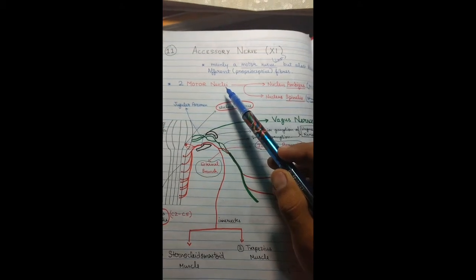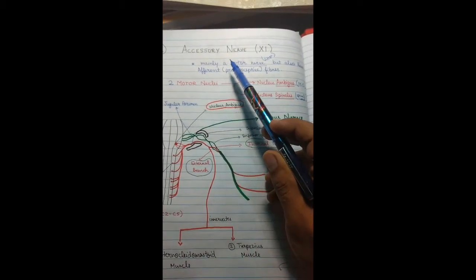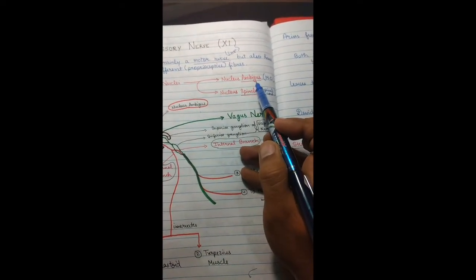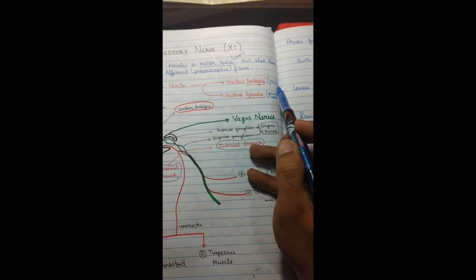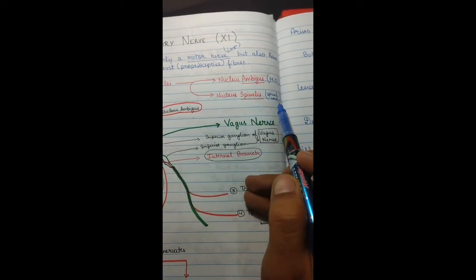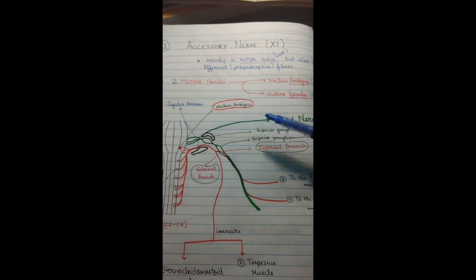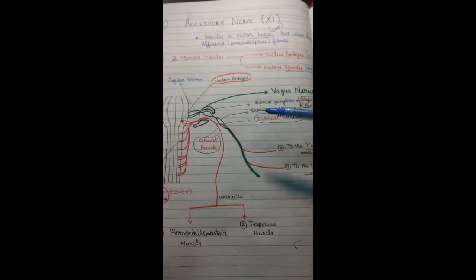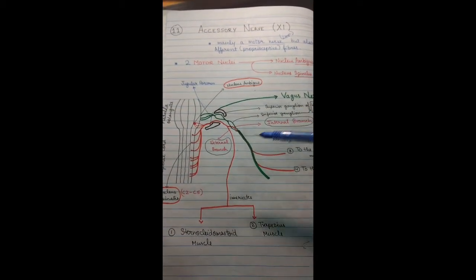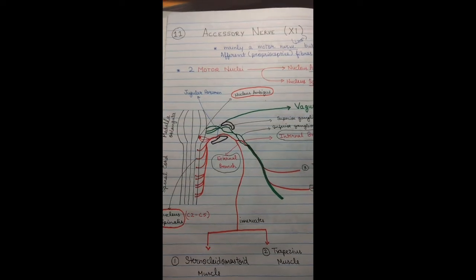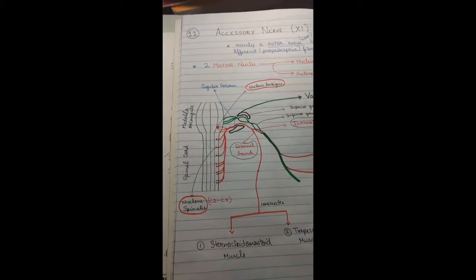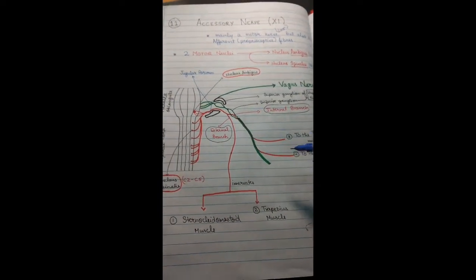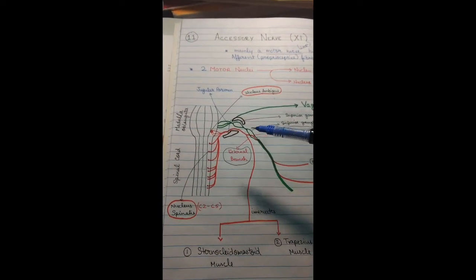The two motor nuclei from which the accessory nerve arises are nucleus ambiguus, present in the medulla oblongata, and nucleus spinalis, present in the spinal cord. We will study the origin of the accessory nerve and its detailed innervations, and I have already written the exact pathway on the diagram.